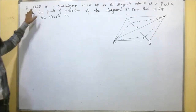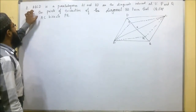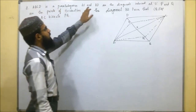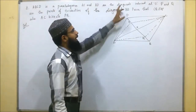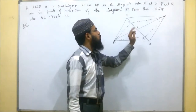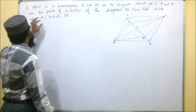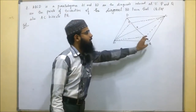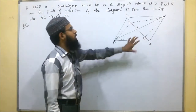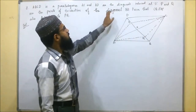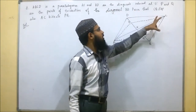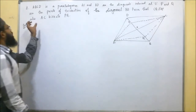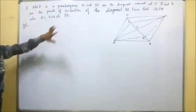This is the eighth problem. ABCD is a parallelogram. AC and BD are the diagonals that intersect at O. P and Q are the points of trisection — that means BD is equally divided into three parts. We need to prove that CQ is parallel to AP, and that AC bisects PQ.